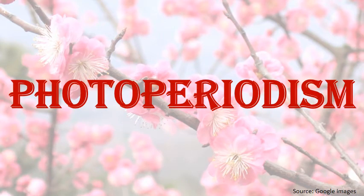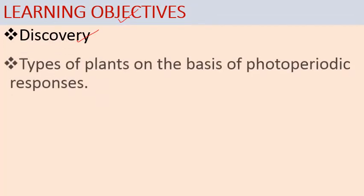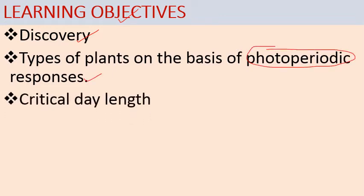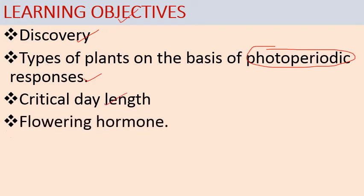Hello everyone, welcome back. Today we will discuss one important topic of plant physiology: photoperiodism. Photo means light, period means duration — so how light duration affects flowering in plants. This phenomenon is known as photoperiodism. Our learning objectives are: discovery of photoperiodism, types of plants based on photoperiodic responses, critical day length, and the hypothetical flowering hormone commonly known as florigen.